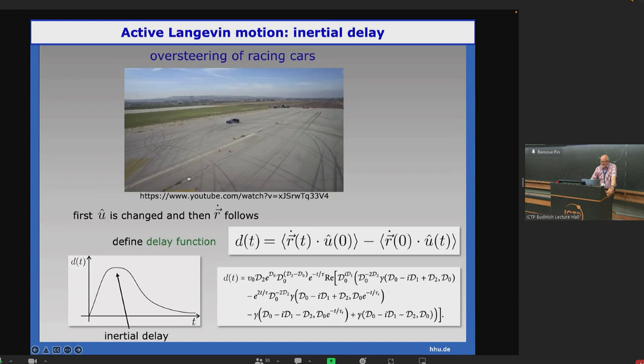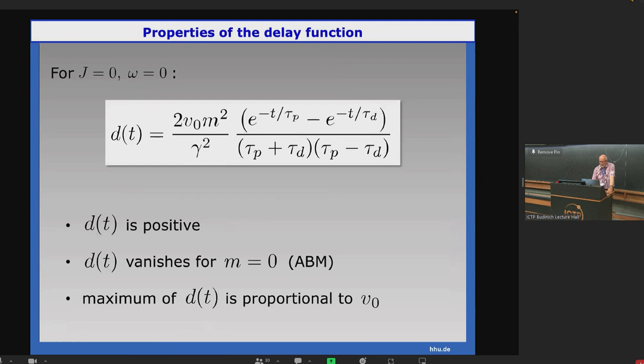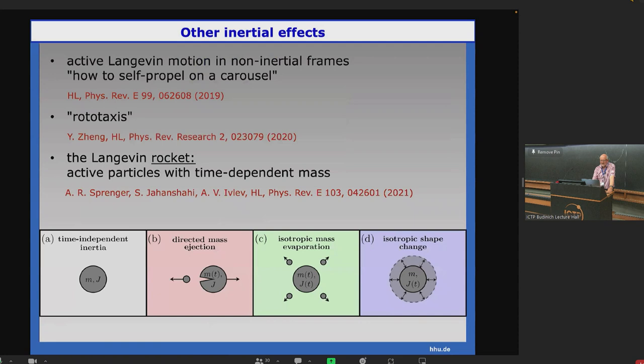By defining a correlation function, a dynamical correlation function. I correlate the velocity after a time t with the orientation before a time t, and you interchange the time arguments and subtract two things. If they are completely uncorrelated, this is zero. But if this is positive, it means that first your orientation changes and then the velocity follows. This we called inertial delay. This correlation function has a peak at a certain time, and the amplitude shows you the effect of inertial delay. Here's an analytical formula. You can work this out completely. We have tested this against data of swimming beetles. Predatory beetles swimming at the water interface exhibit also this kind of inertial delay effect.